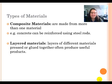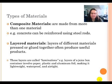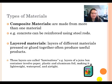Another type of material are layered materials. These are different layers of materials that have been pressed or glued together and are often used in products that you use every day. These layers are called laminations and you can see them in juice boxes, because juice boxes contain layers of paper, plastic, and aluminum foil that make them lightweight, waterproof, and airtight.